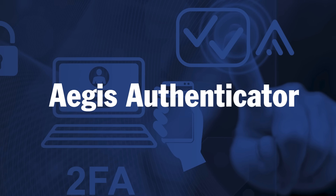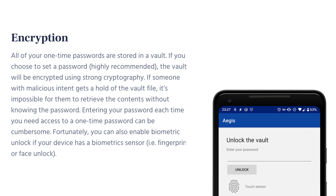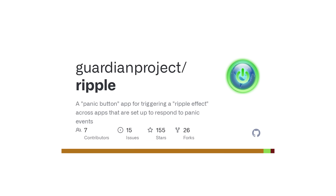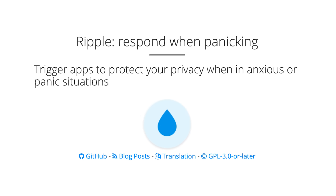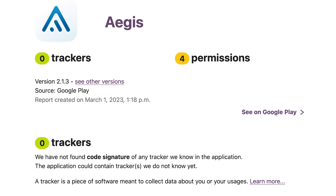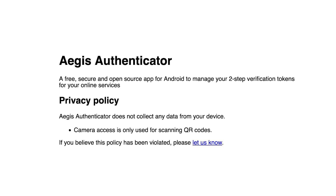Next we have Aegis Authenticator, another open source TOTP app, only available for Android, with a built-in QR code scanner. It's available on both the Google Play Store and F-Droid, and the TOTP secrets are stored in an encrypted vault for added security. Aegis also has biometric support and integration with Guardian Project's Ripple, which allows you to delete the vault if you hit the panic button — a really cool feature. Exodus Privacy found zero trackers in Aegis, the MISC team confirmed no trackers in testing, and their privacy policy states they don't collect any data. Aegis is another solid choice if you're on Android.